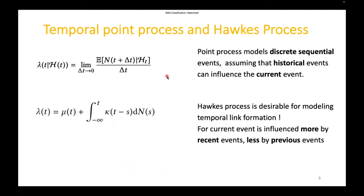Point process models discrete sequential events by assuming that historical events before time t can influence the occurrence of the current event. Conditional intensity function characterizes the arrival rate of sequential events, which can be defined as the number of events occurring in a small time window given all the historical events.